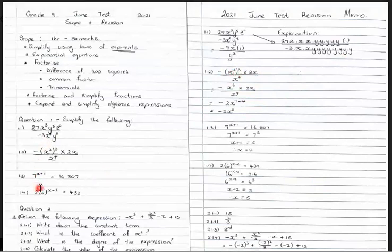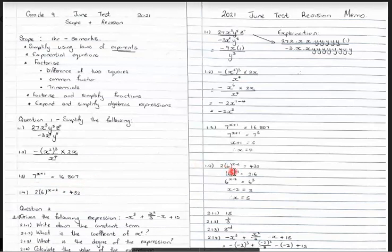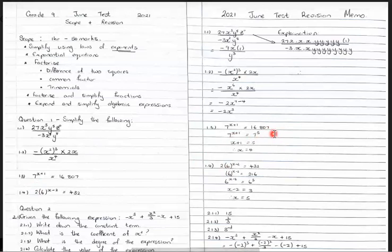Question 1.3: you've got 7 to the power x plus 1 equals 16,807. We want to write 16,807 with a base of 7. Testing on your calculator, you get 7 to the power of 5. Now that we have the same base, we equate the exponents: x plus 1 equals 5. Transposing the 1, we get x is equal to 4.